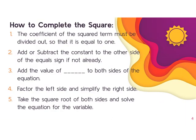And then the actual steps are very similar to completing the square. So the coefficient of the square term must be divided out so that it is equal to 1. Then we're going to add or subtract the constant to the other side of the equal sign, if it's not already.